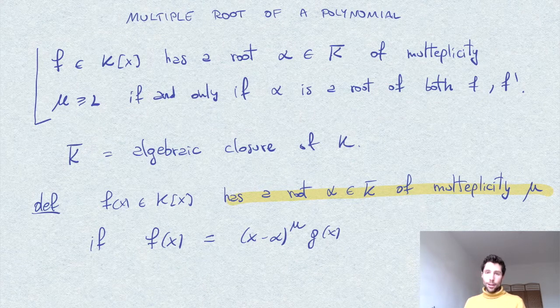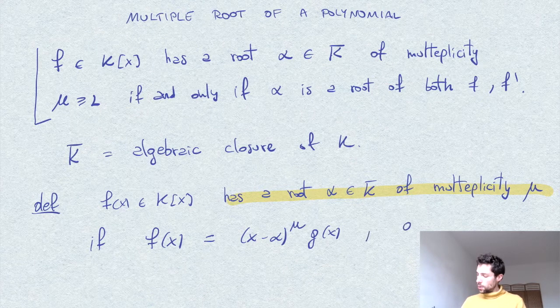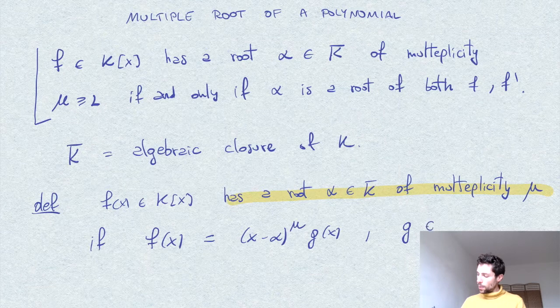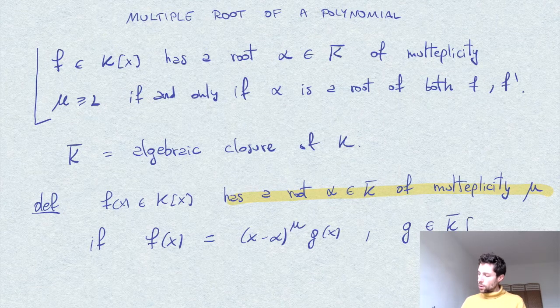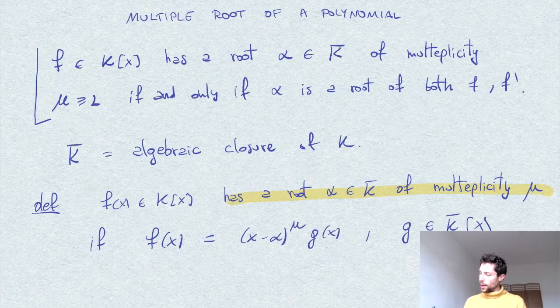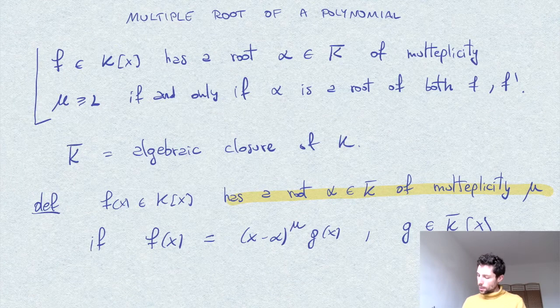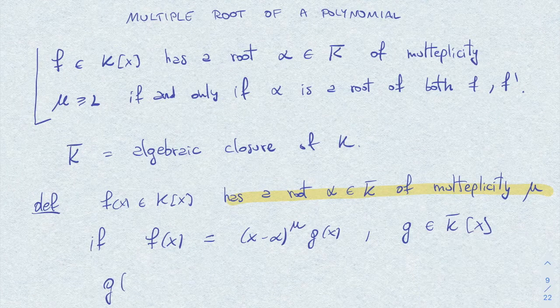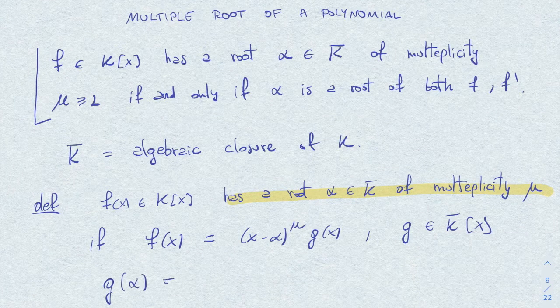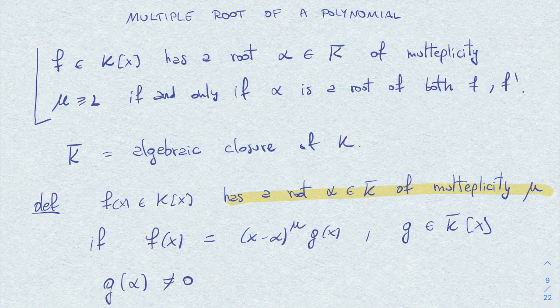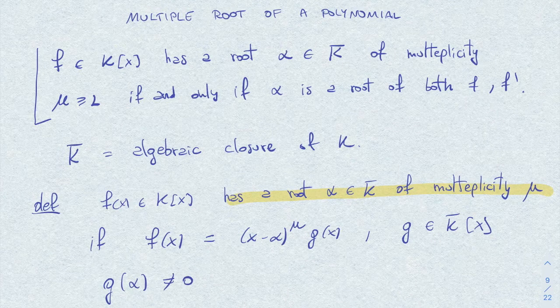which doesn't have alpha as a root. So g will be some polynomial in the closure of k and such that g of alpha is not zero. So this is the definition.